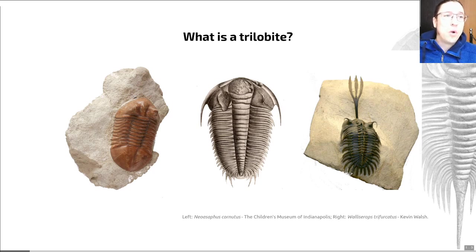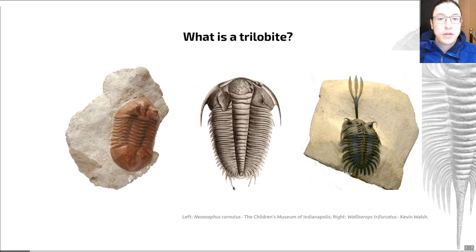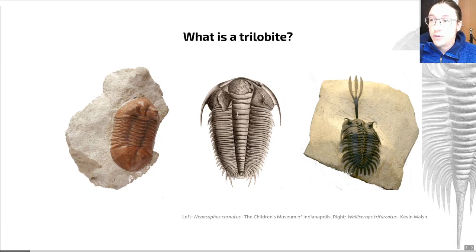So what is a trilobite? Trilobites are animals — members of a group of bilaterally symmetrical animals. If you draw a line down the middle, the left and right-hand sides are symmetrical. They have segments: each one of these divisions in the middle of the creature is a segment. They have an exoskeleton, an external support structure that provided protection during life. And they have a body split longitudinally into three lobes: the middle one is the axial lobe, and the ones on either side are called the pleural lobes.